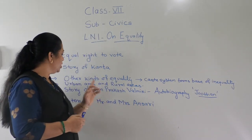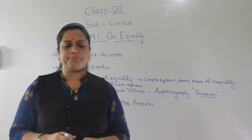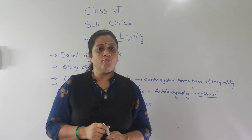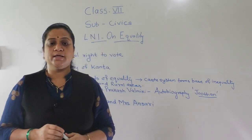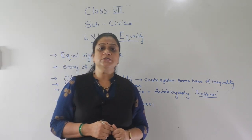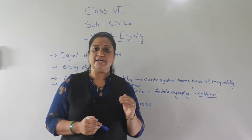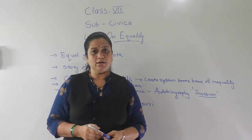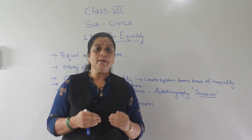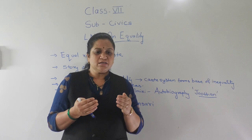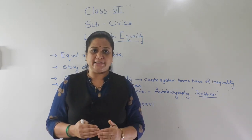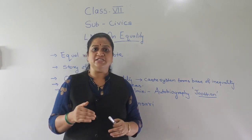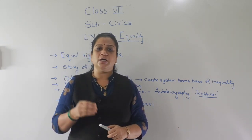We are going to study this through the story of Om Prakash Valmiki. In class 6, you studied about the term Dalit. Dalit means 'broken' — the term was used for the untouchables. Untouchables were people who were treated very rudely in society; they were not allowed in common places or to draw water from wells in villages.